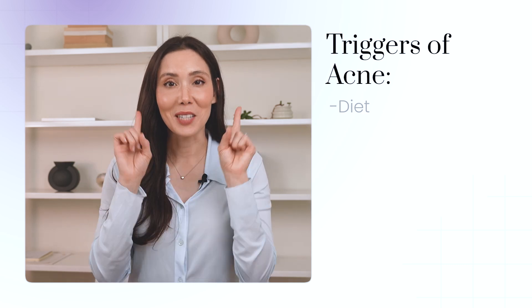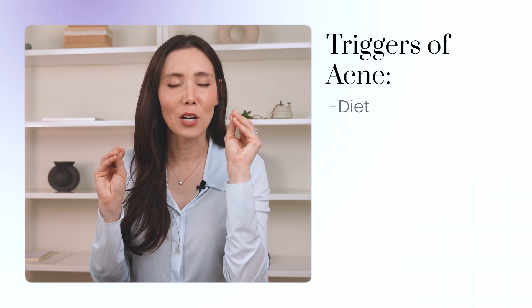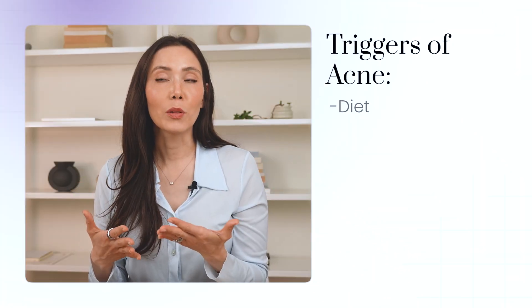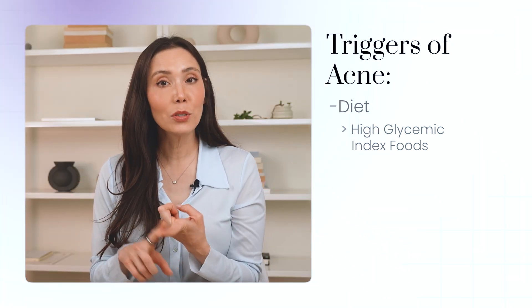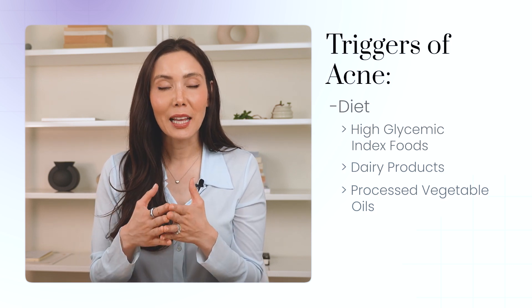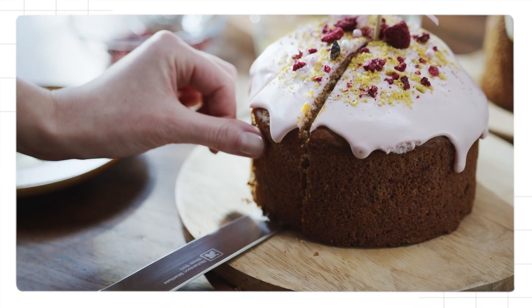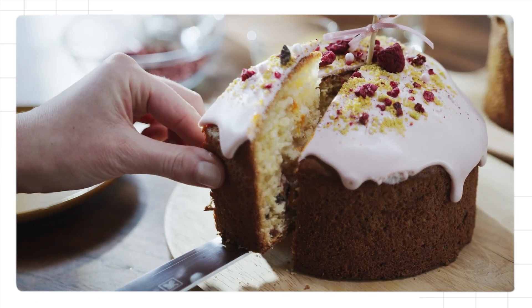Getting back to acne triggers — diet. This can be tricky because some people can eat the healthiest diet and still have terrible acne, but for some people diet can be very triggering. Things that can trigger acne include high glycemic index foods, dairy products, or processed vegetable oils. Dairy can increase insulin-like growth factor, and this hormone has a downstream effect on oil production in your pores. Sugar and processed oils can increase inflammation. Sugar has also been found, along with dairy, to increase oil production and make your keratin cells stick together more — just more sticky in the pores — contributing to a more clogged pore.